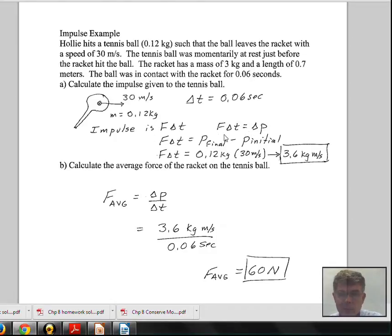The change in momentum, delta P, means momentum final minus momentum initial. The initial momentum in the horizontal direction was zero, so that simplifies our calculation. We just need to use the final momentum: mass times velocity, 0.12 kilograms times 30 meters per second, and we find 3.6 kilograms meters per second. That's the impulse given to the tennis ball.